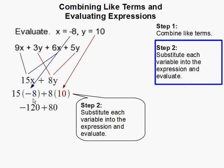15 times negative 8 is negative 120. 8 times 10 is 80. And negative 120 plus 80 gets us negative 40. And this completes our problem.